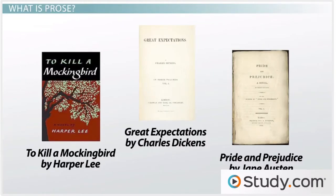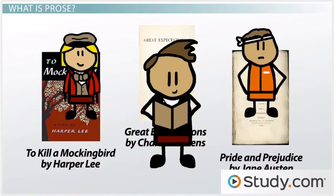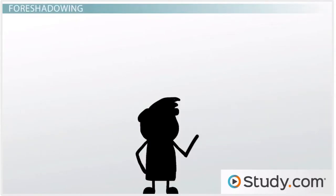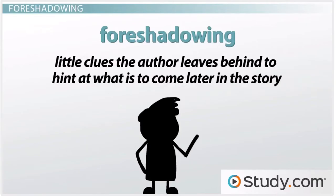There are many ways we delve deeper into prose to take away more than just surface details. As readers, we interpret the author's use of characters and events, and think about how they convey the book's themes and messages. One way to interpret meaning when reading prose is to look at the text for foreshadowing, or little clues the author leaves behind to hint at what is to come later in the story.